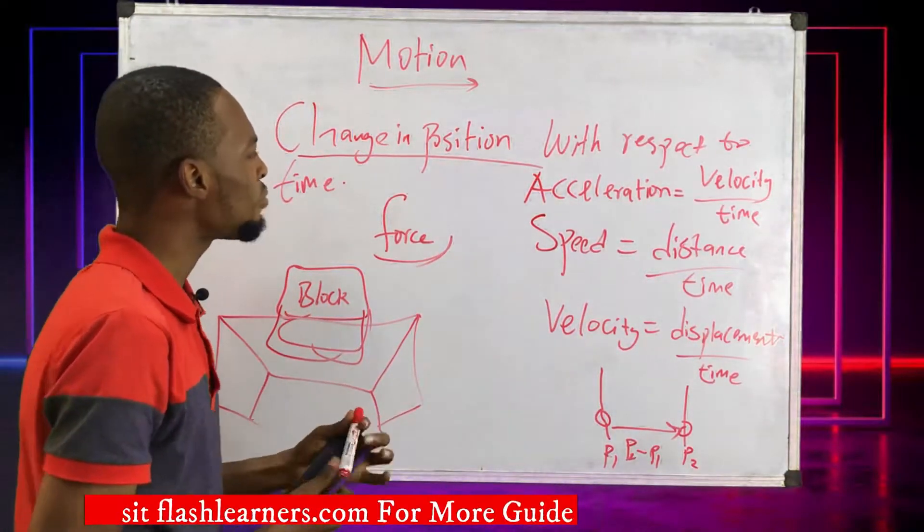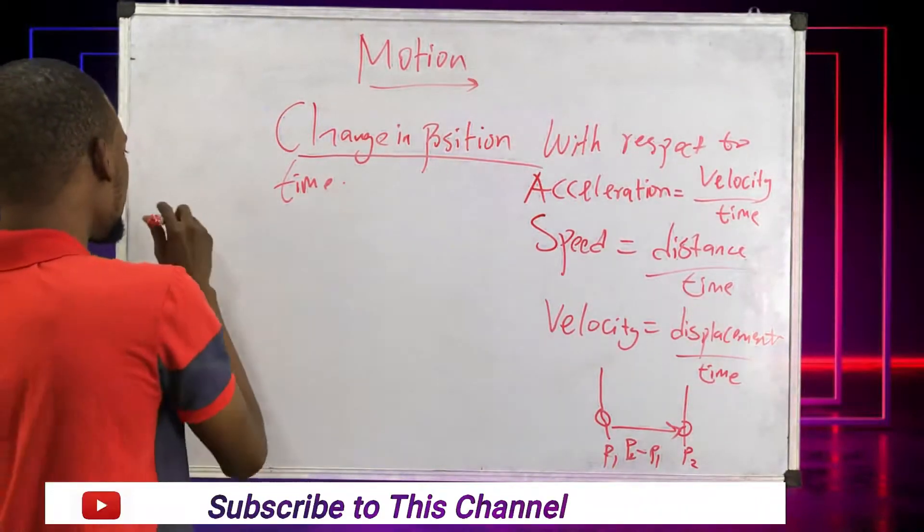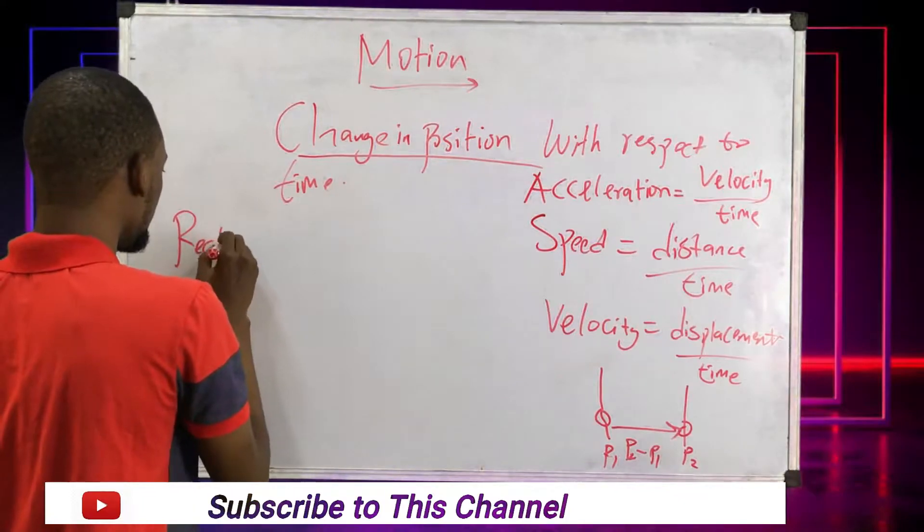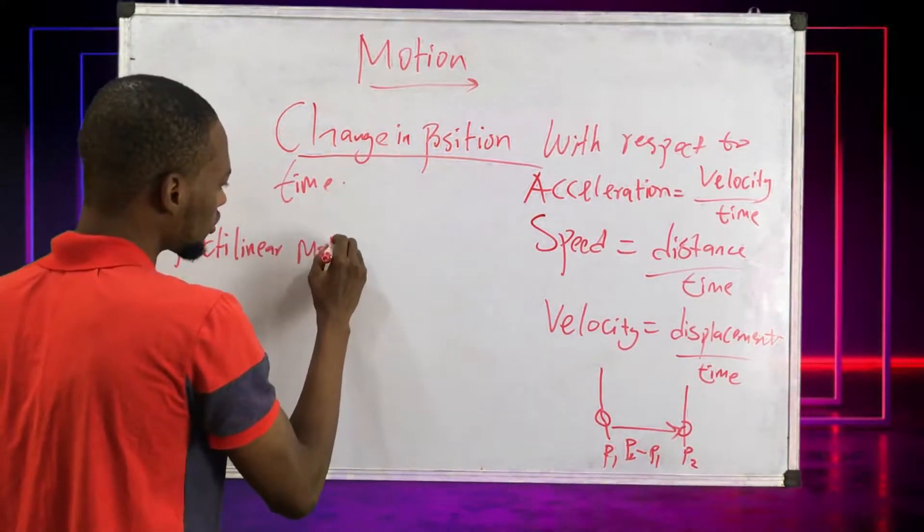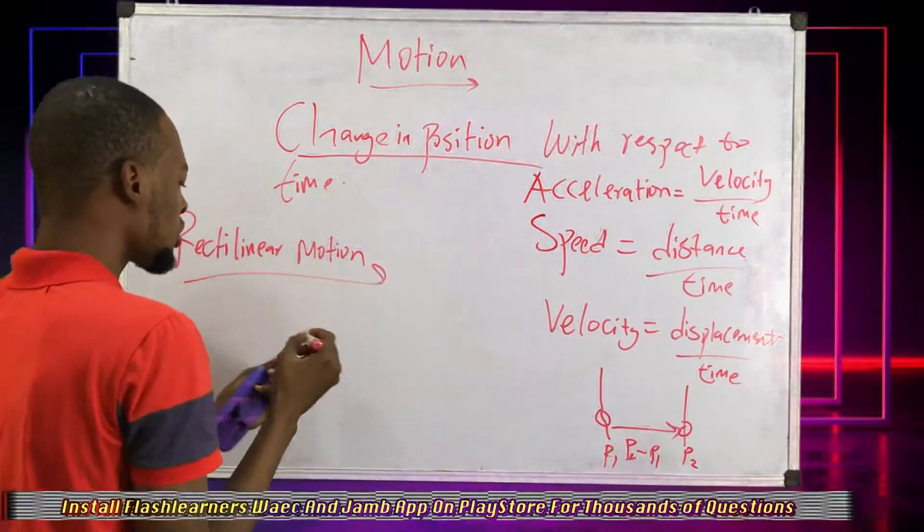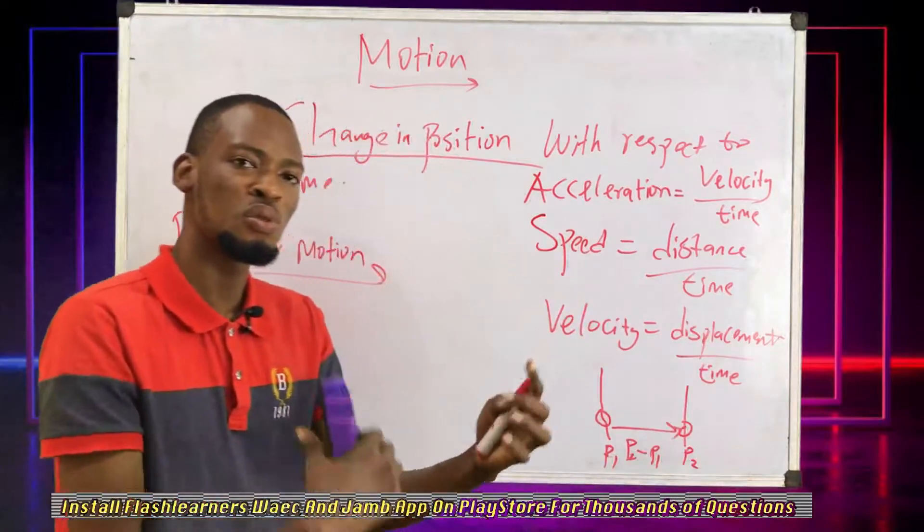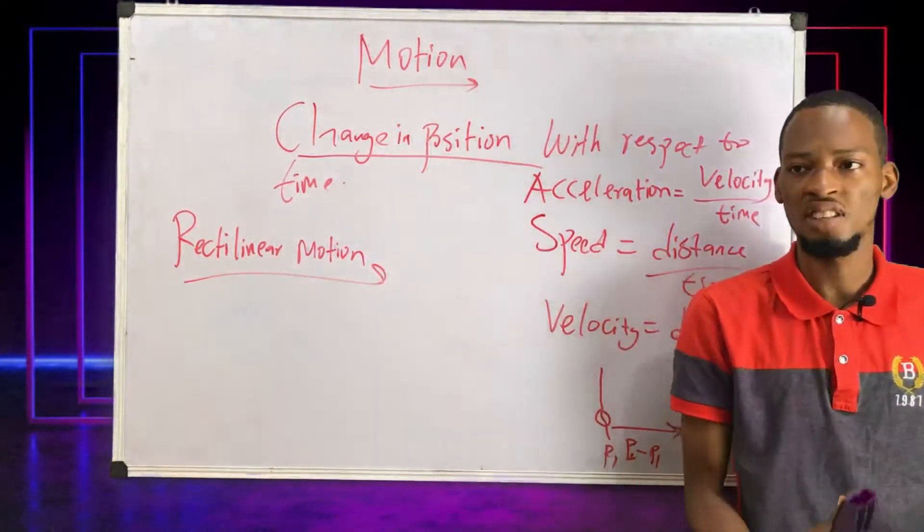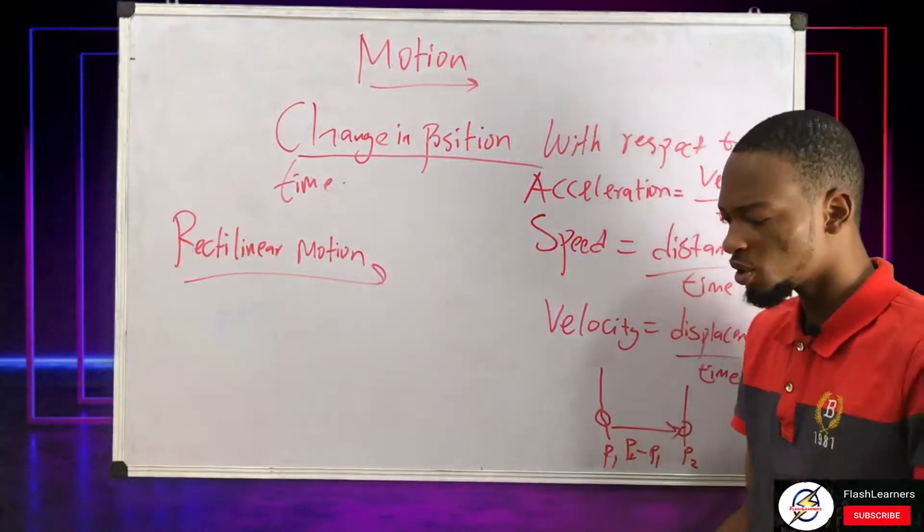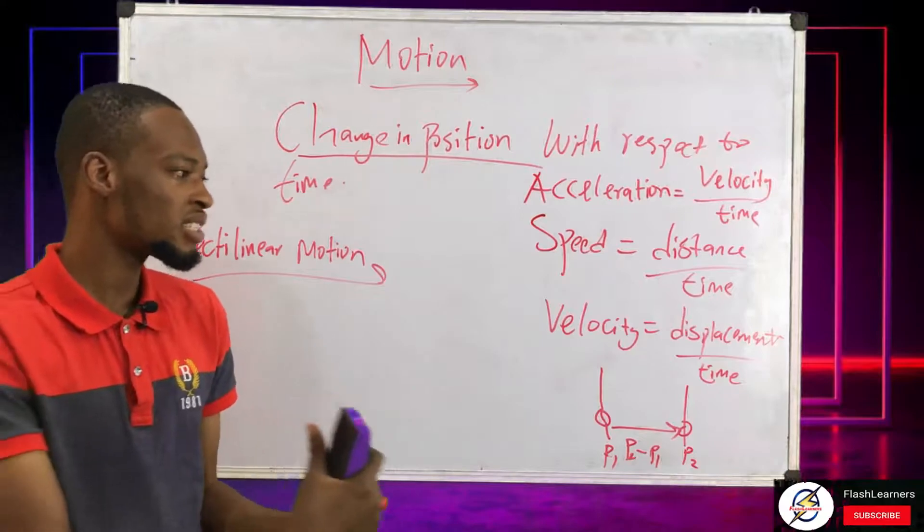The first type of motion I will explain is rectilinear motion. Rectilinear motion is simply the motion of a body from one point to another. As I'm moving from one place to another, that is rectilinear motion. The motion of a cat, or riding a bicycle, or a car going somewhere moving from one point to another is rectilinear motion.